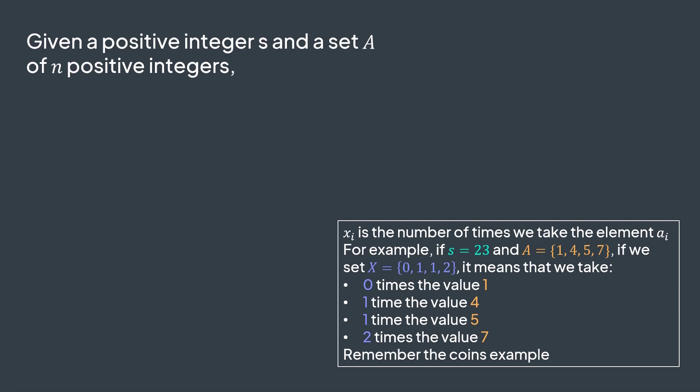For example, with coins, if we have coins of value 1, 4, 5, or 7, these values of x mean that we take 0 coins of value 1, 1 coin of value 4, 1 coin of value 5, and 2 coins of value 7.